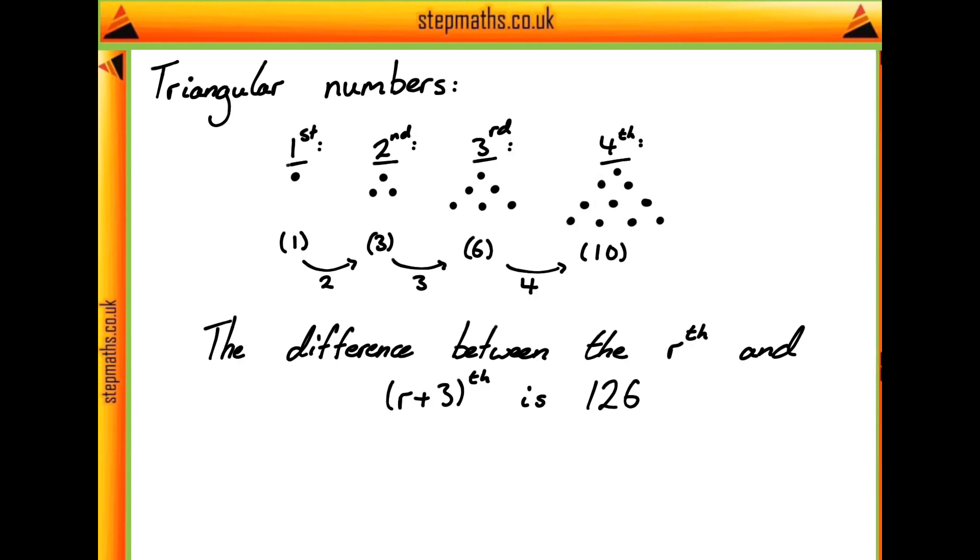It also tells us the difference between these numbers, which is 2, 3, and 4. Finally, it tells us that the difference between the rth and the (r+3)th triangular number is 126. So the question asks us to find r in this case.